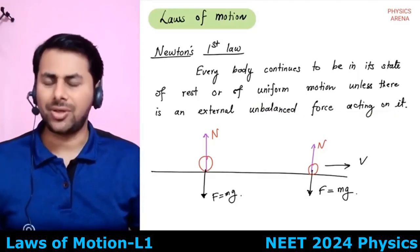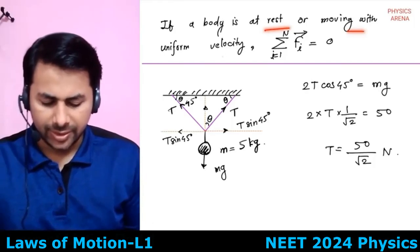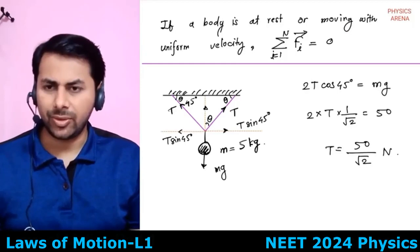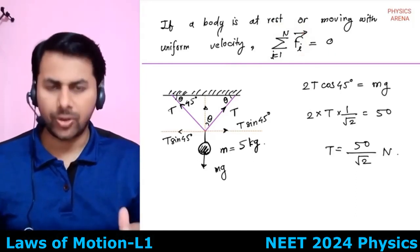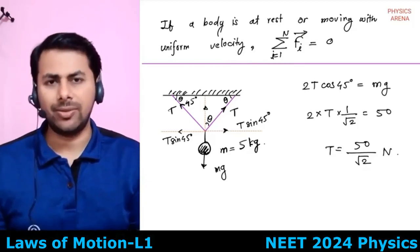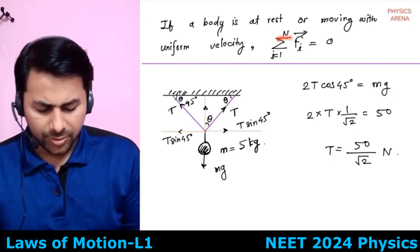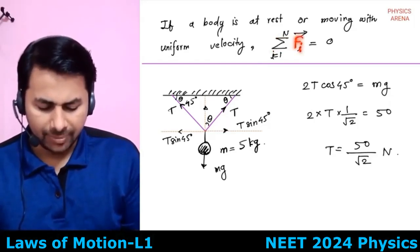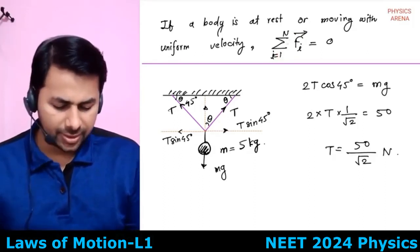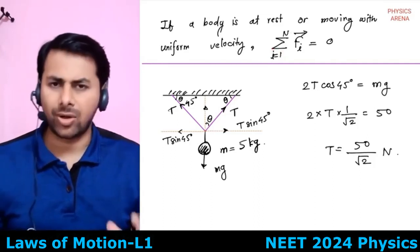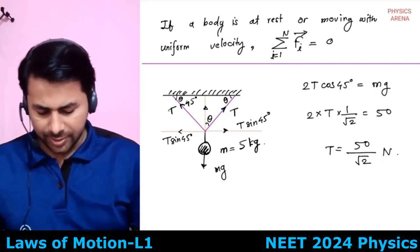Newton's first law says: if the sum of all forces acting on a body is zero, then the body remains at rest or keeps moving with uniform velocity — we say the body is in equilibrium. We can write this as: if Fi-bar is a force acting on a body, then the summation from i=1 to n of Fi-bar equals zero. Let's consider an example: a metal ball hanging from two ropes. We want to find the tension in the ropes, which are inclined at 45 degrees.